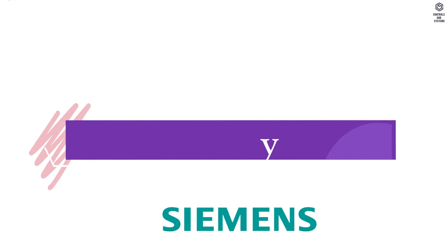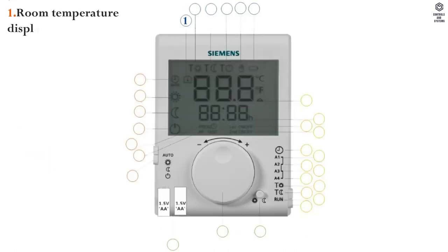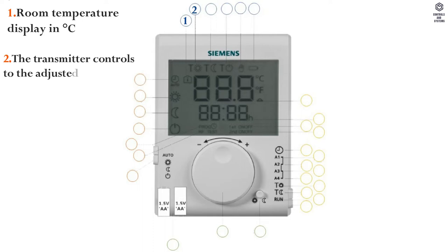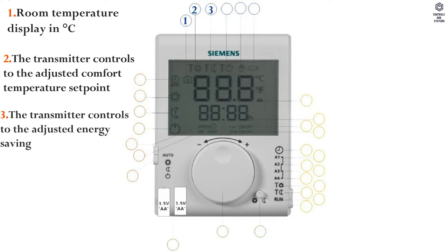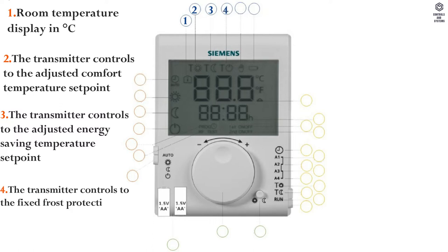Display elements: 1. Room temperature display in degrees Celsius. 2. The transmitter controls to the adjusted comfort temperature set point. 3. The transmitter controls to the adjusted energy saving temperature set point. 4. The transmitter controls to the fixed frost protection temperature set point.